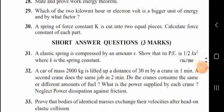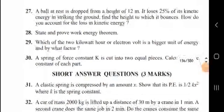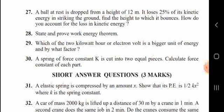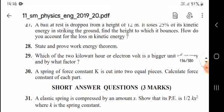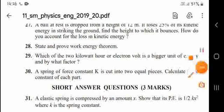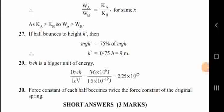Numerical question 27: A ball at rest is dropped from a height of 12 meters and loses 25% of its kinetic energy striking the ground. Find the height to which it bounces. Since 75% of energy is retained: mgh' = 75% of mgh, so h' = 0.75 × 12 = 9 meters.